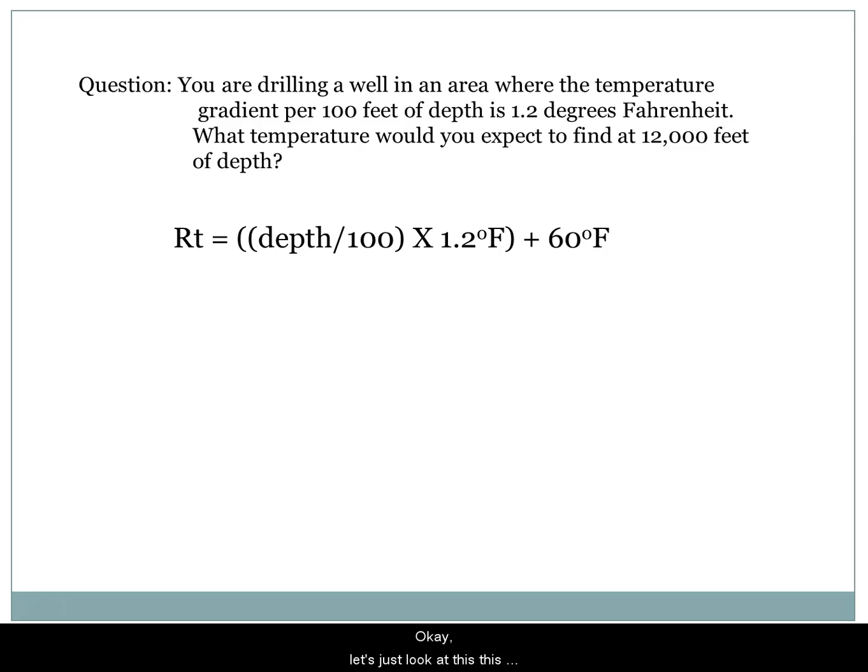Let's look at this equation first to understand it. Reservoir temperature - we're looking at depth, and depth is always true vertical depth. How deep is it? If we're drilling at an angle, we may have 11,000 feet of pipe in the hole but we may only be 10,500 feet deep. So we're looking at depth from top to bottom.